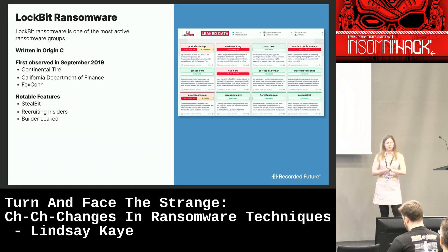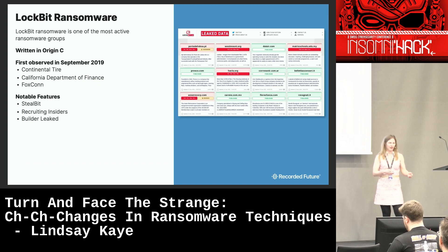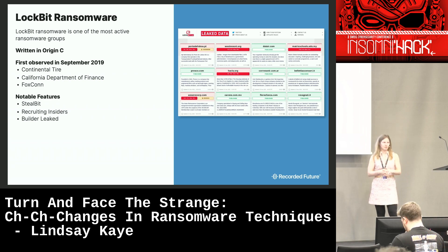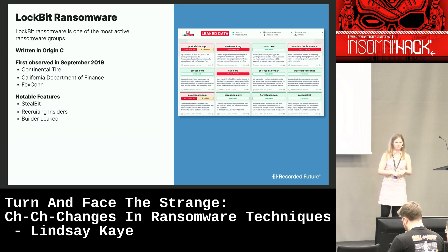Moving on to Lockbit — one of the most active ransomware groups today. Their original version was written in C, and they've been around since September 2019. Some notable features are Steelbit (the automated data exfiltration tool), their recruiting of insiders — they offer money and jobs to people inside organizations to provide initial access — something we haven't seen other ransomware groups do. Additionally, I'll talk about what happened when their builder got leaked.